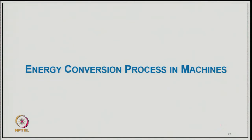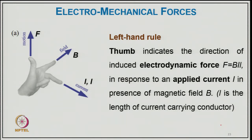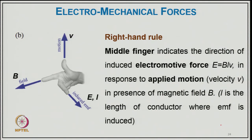The energy conversion process in electrical machines follows the left-hand rule, where the thumb indicates the direction of the induced electrodynamic force F = BIL, in response to the applied current in the presence of magnetic field B, and L is the length of the current-carrying conductor on which the force is exerted. The right-hand rule gives the induced EMF: the middle finger indicates the direction of induced electromagnetic force E = BLv, in response to applied motion with velocity v in the presence of magnetic field B.